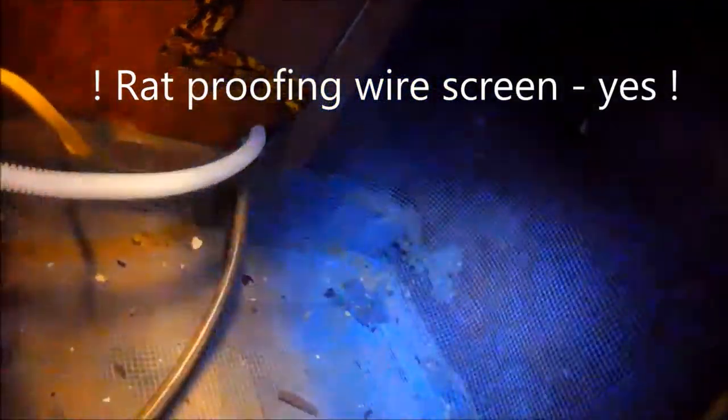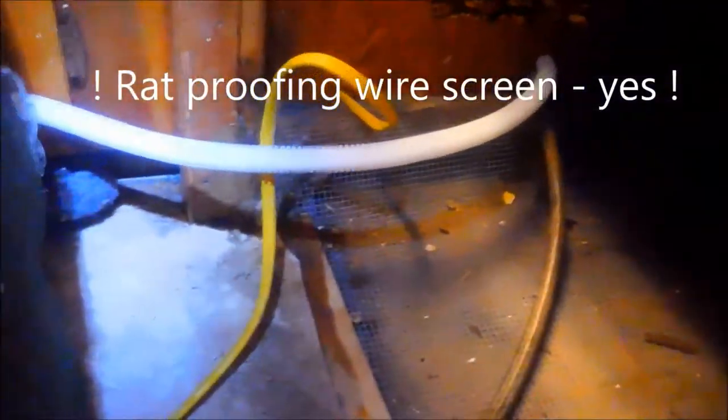So I've got the dishwasher out and I'm going to check the pump. This one has rat proofing, it's got the wire mesh screen, which is really good because I've seen a lot of rats destroy dishwashers. Yeah, they'll eat almost anything.